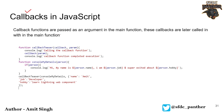Callback functions are nothing - these are passed as an argument inside the main functions, and then from the main functions we call them later on whenever we want, based on either synchronous or asynchronous execution.